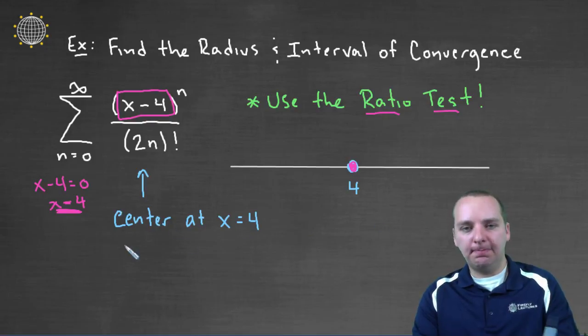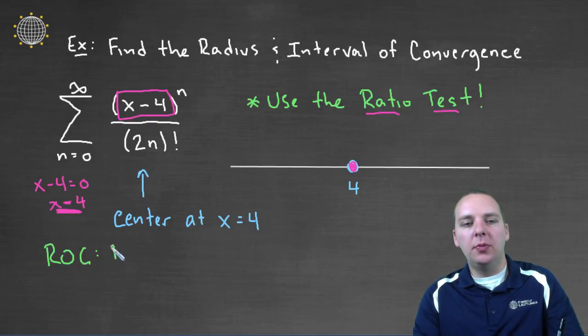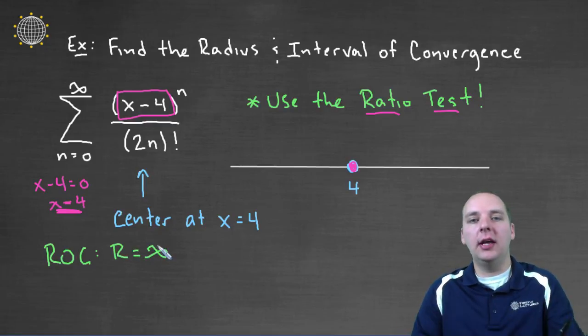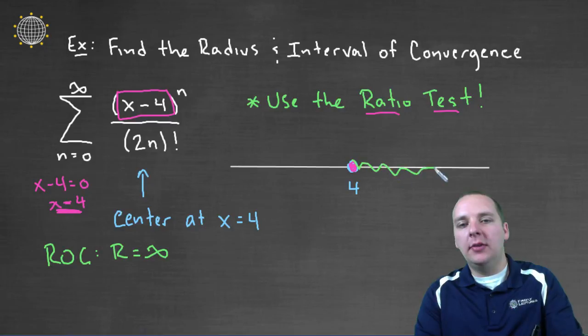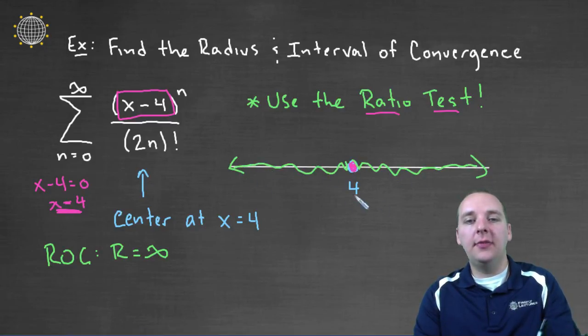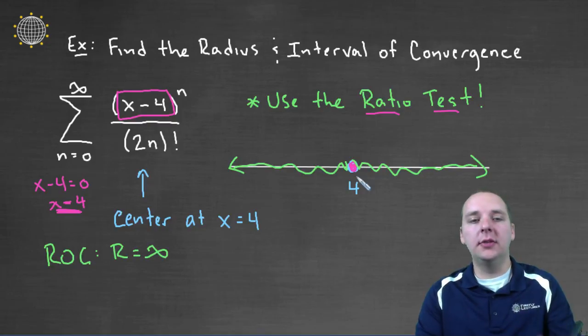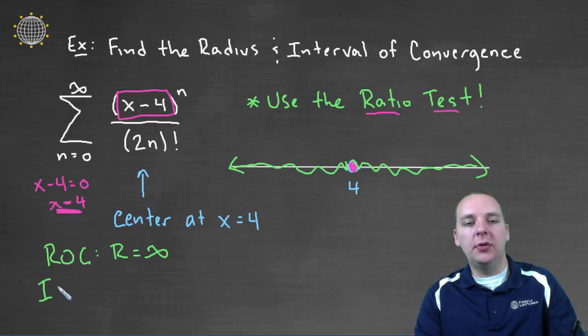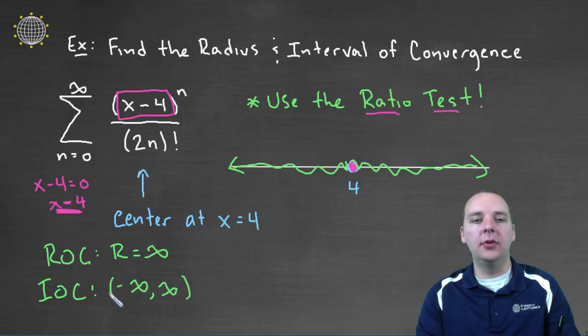So what does that mean in the big picture? That means that your radius of convergence would be r equals infinity, right? Because it converges for all x's, and you can go as far as you want to the right and to the left of four and always converge. So your interval of convergence would be from minus infinity to infinity written in interval notation.